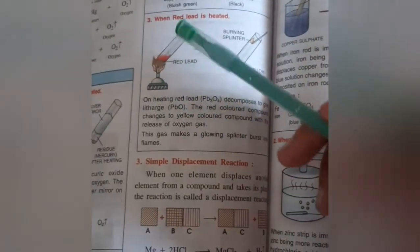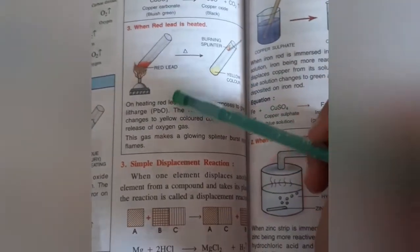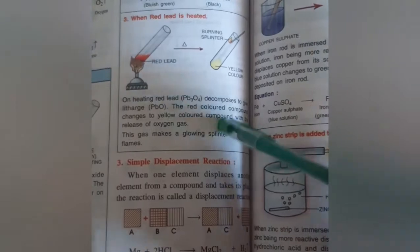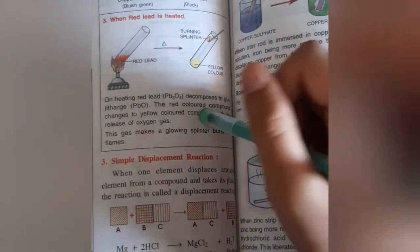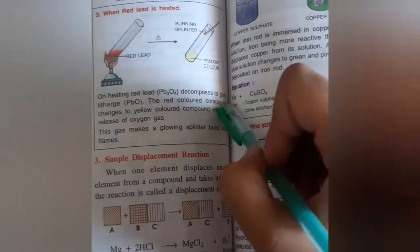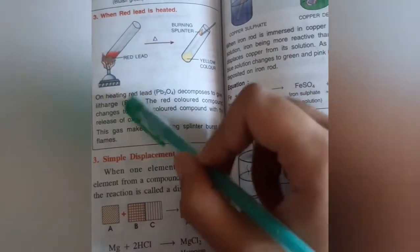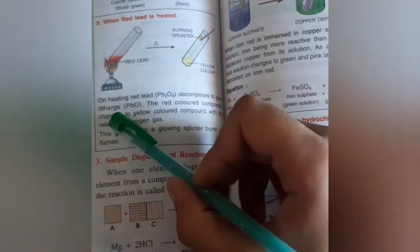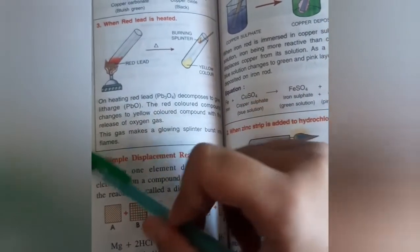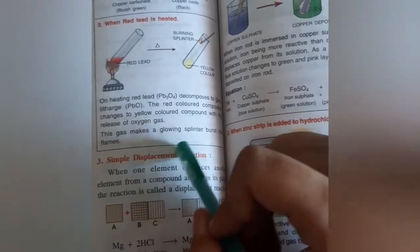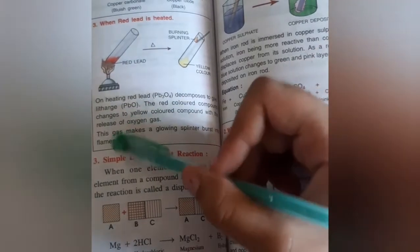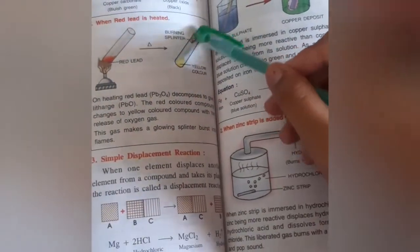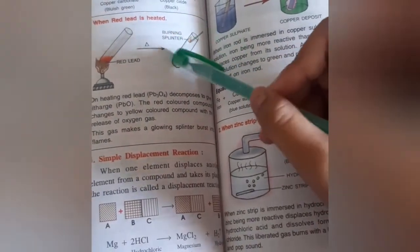Next is when red lead is heated. Red lead decomposes to form light red lead monoxide. The red colored compound changes to yellowish colored compound with the release of oxygen gas. This gas makes a glowing splinter burst into flames. Here is the burning splinter and here is the yellow color.